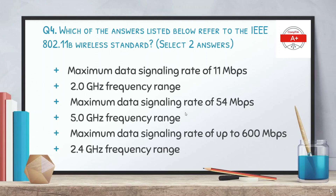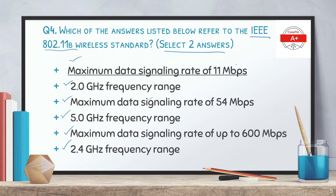Question 4: Which of the answers listed below refer to the IEEE 802.11b wireless standard — select 2 answers. The options are: maximum data signaling rate of 11 Mbps, 2.0 GHz frequency range, maximum data signaling rate of 600 Mbps, and 2.4 GHz frequency range. The correct answers are: maximum data signaling rate of 11 Mbps and the frequency range of 2.4 GHz.